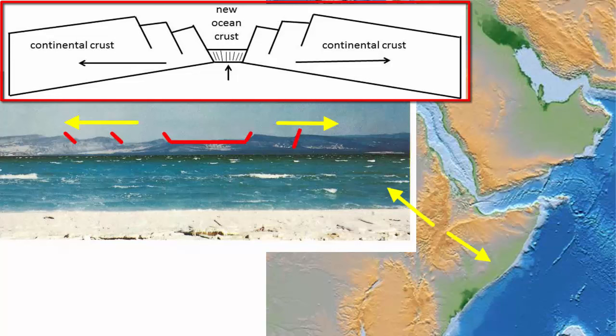Eastern Africa is part of a new rift zone and one of the only places to see this type of plate boundary at this stage on land.